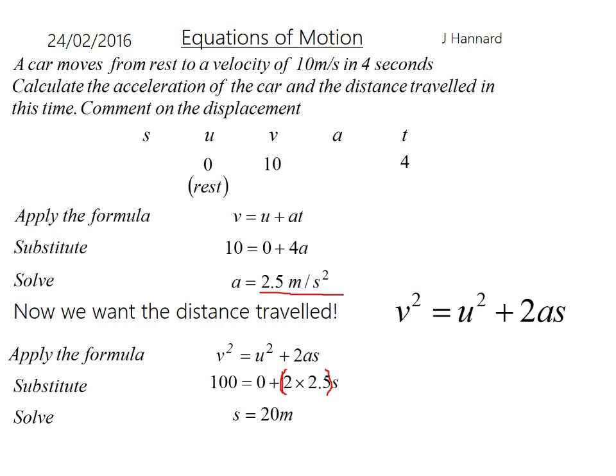Comment on the displacement. Since the car has not changed direction, displacement and distance are the same. If you get a negative answer, you would say that he's reversed or gone back, but since it's positive the distance and displacement are the same.